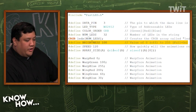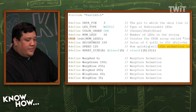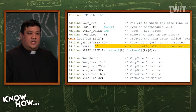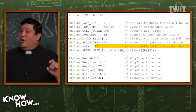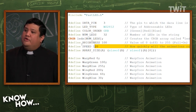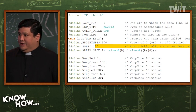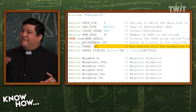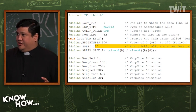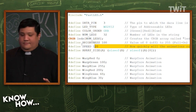The other thing you want to know is the speed. The number you put here is in the delay — it's 1,000 divided by this number. So the higher you make this number, the less delay there's going to be, and the faster the animations are going to run.